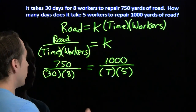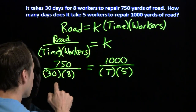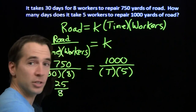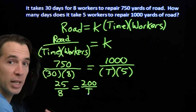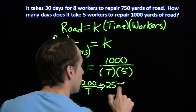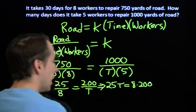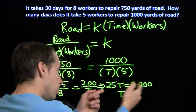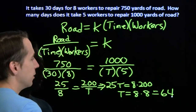This is an equation we know how to handle. First, we simplify both sides. 750 divided by 30 is 75 divided by 3, which is 25. So I can write this as 25 over 8. And over here, 1,000 divided by 5 is just 200. Now I can multiply both sides by 8 and by t — you might think of that as cross-multiplying — and I get 25 times t equals 8 times 200. Dividing both sides by 25, t equals 8 times 8, which is 64 days.